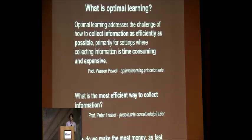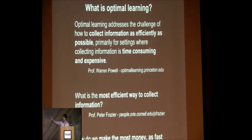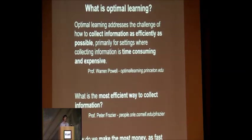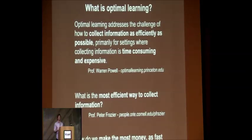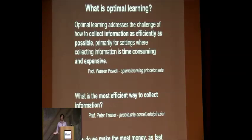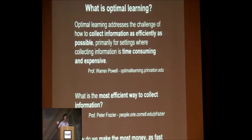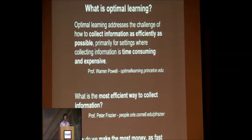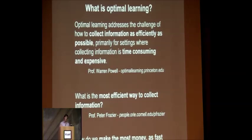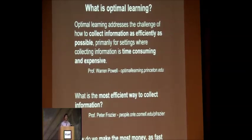So what is optimal learning? Here we have my academic family tree — my advisor's advisor, my advisor, and me. You can think of it as collecting information when collecting that information is time-consuming and expensive, so you want to do it as efficiently as possible. If you need to run an A-B test on live traffic, that's time-consuming and expensive. Maybe you need to spin up a batch job that consumes 10,000 cores on a cluster — it takes 24 hours and a bunch of money every time you run that.